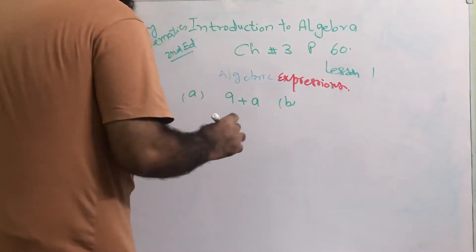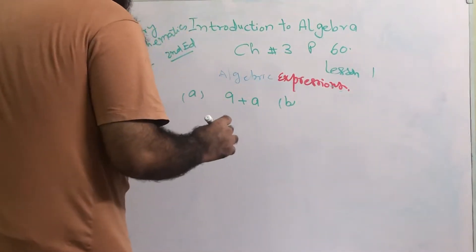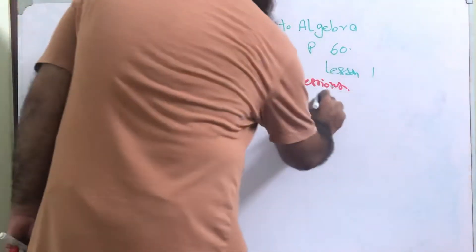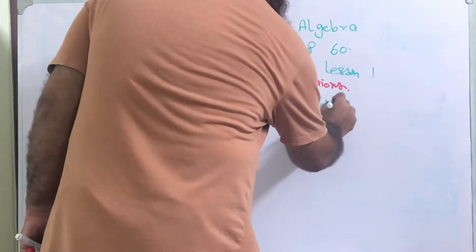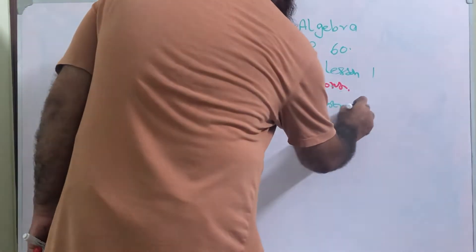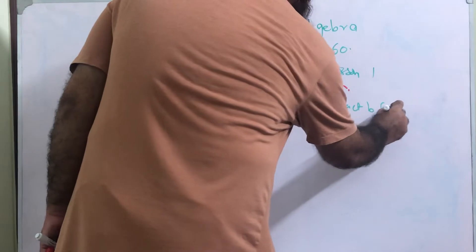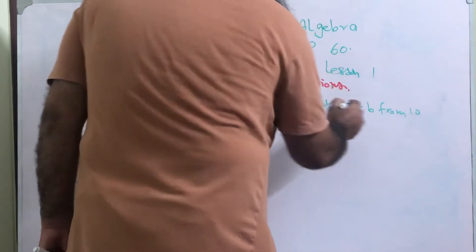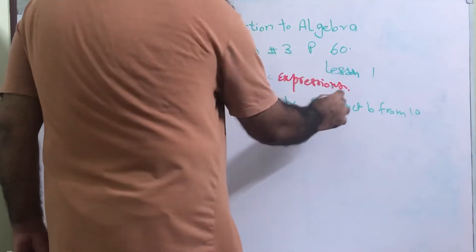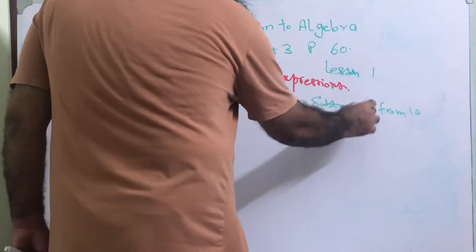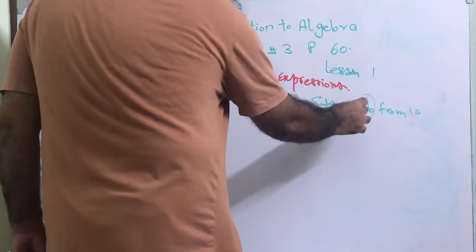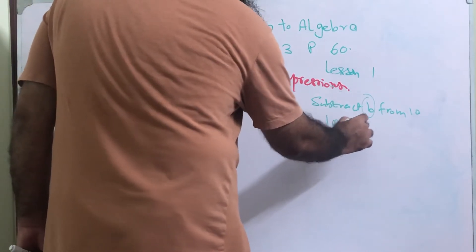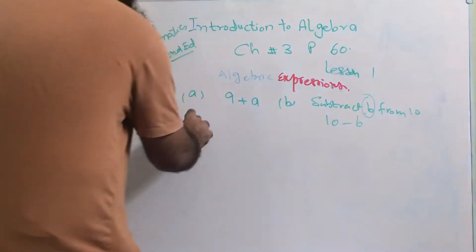Part b is: subtract b from 10. So b will be subtracted, it will get the minus sign, so it will be 10 minus b. This will be the answer.